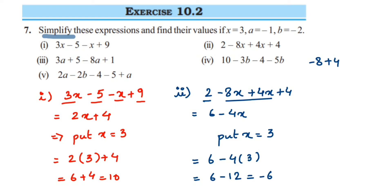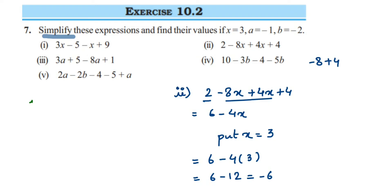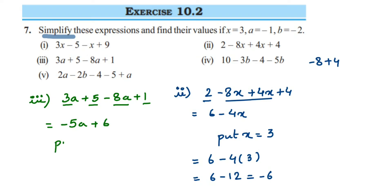The third question: 3a plus 5 minus (8a plus 1). The like terms are 3a and minus 8a. They have different signs, so 8 minus 3 is 5, and since 8 is greater and negative, we get minus 5a. The constants 5 plus 1 give plus 6. Substituting a=-1: minus 5 into minus 1 plus 6 — minus times minus is plus, so 5 plus 6 equals 11.